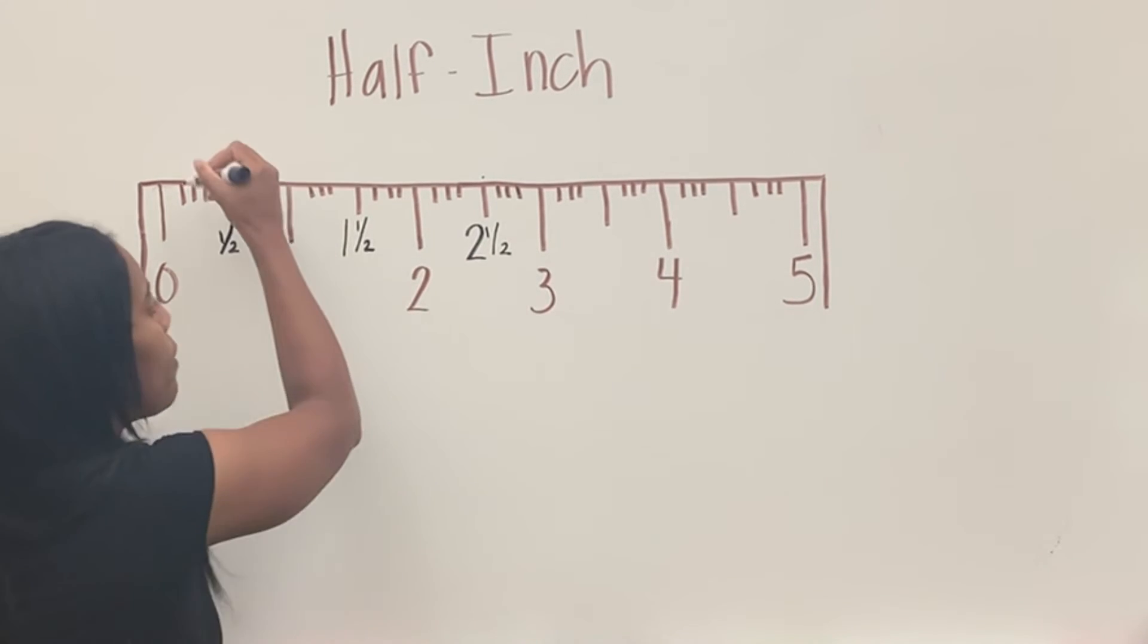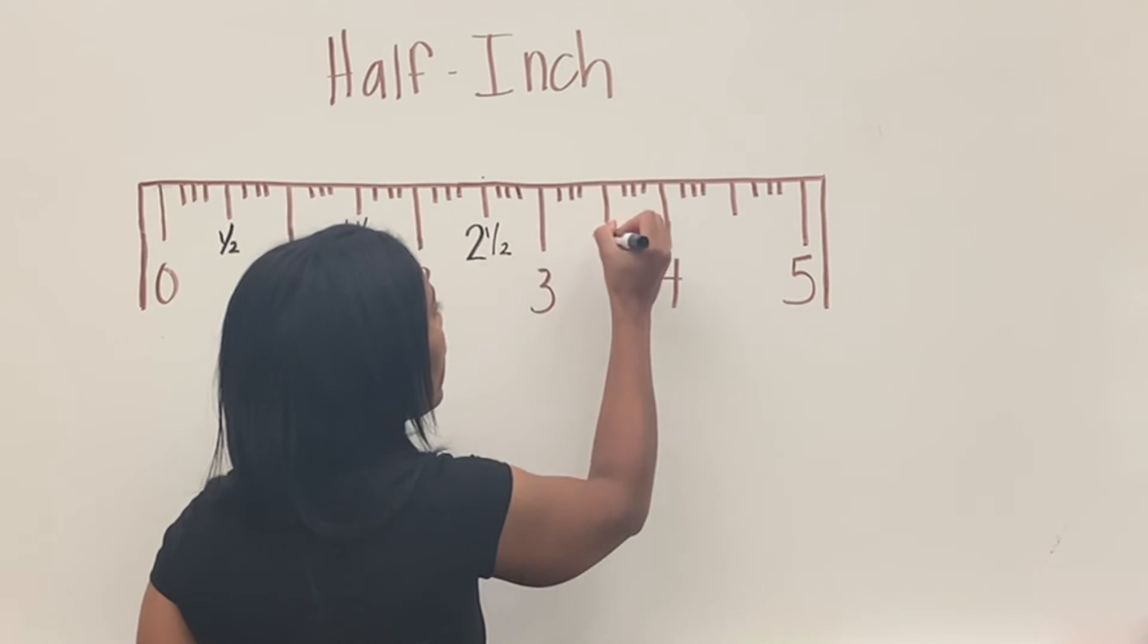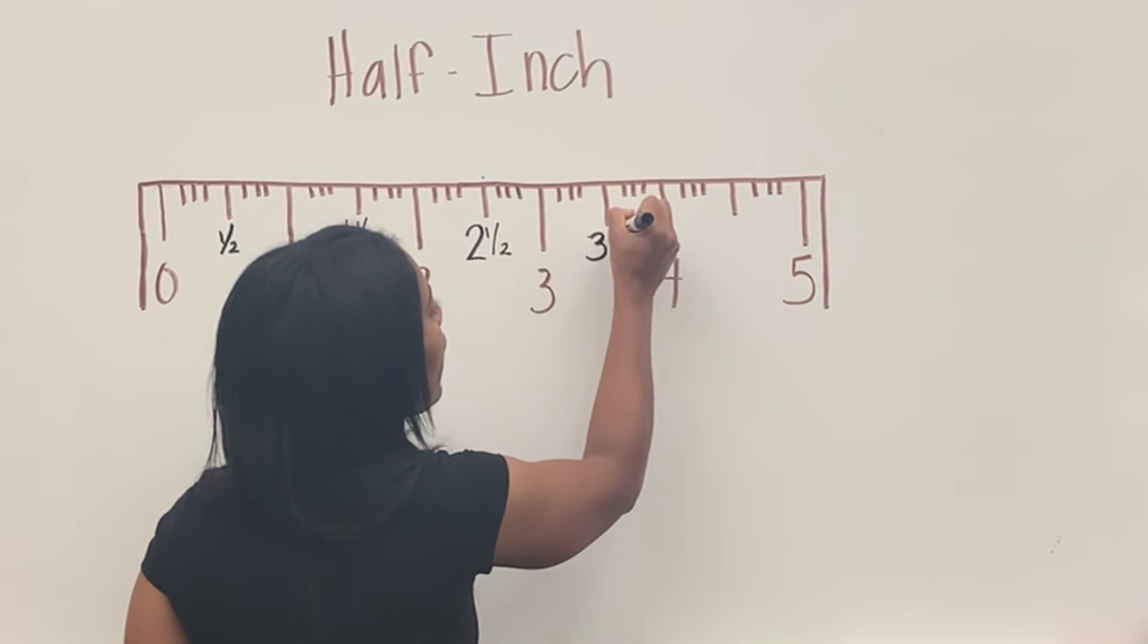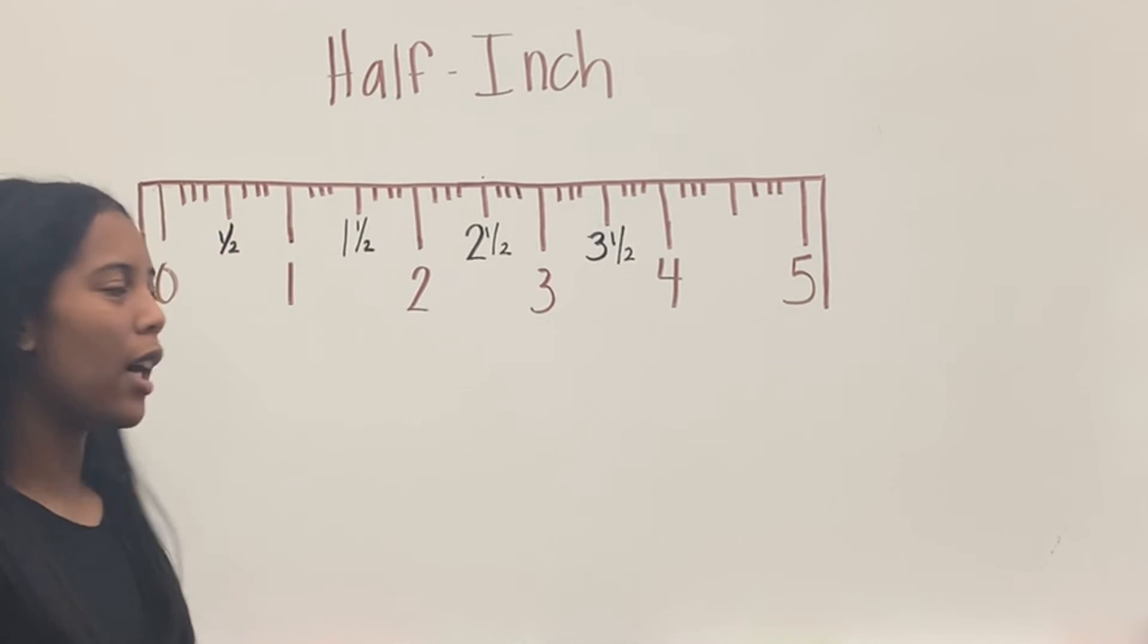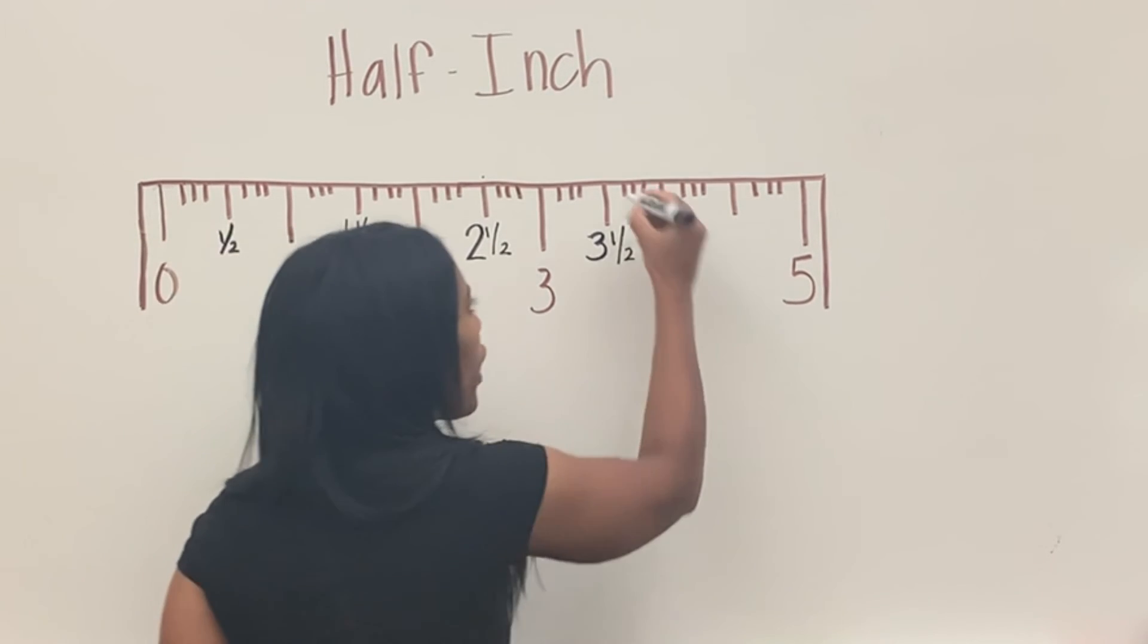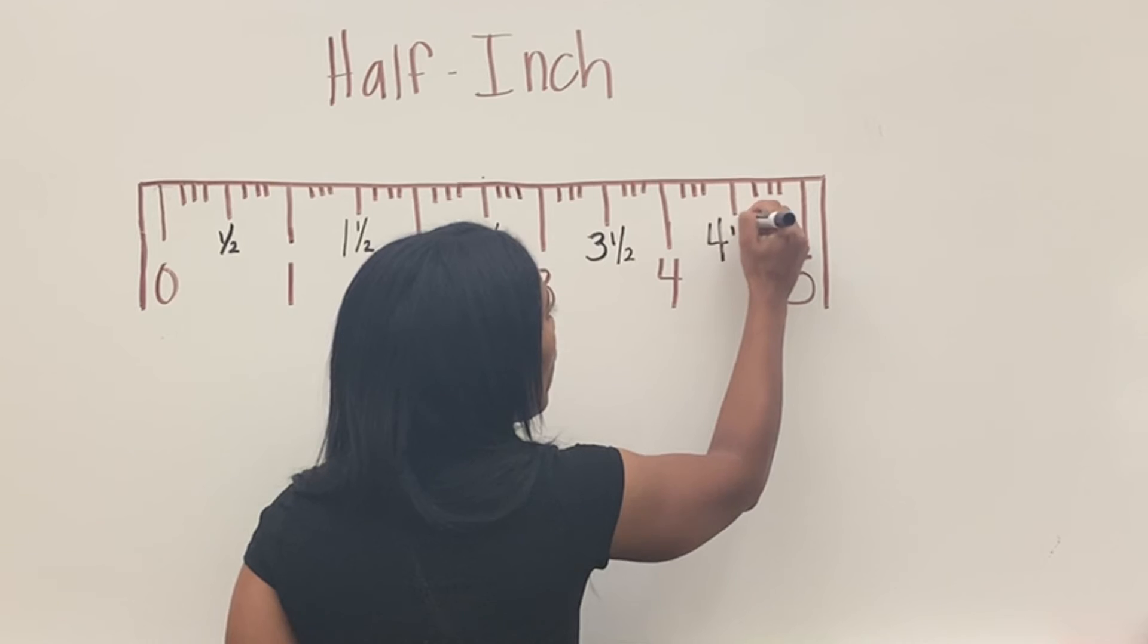Same thing. If you measure a line and it goes past three, you would say it's three and then a half an inch. You kind of see how it goes, and then same thing with four. If you go past four, you say four and a half.